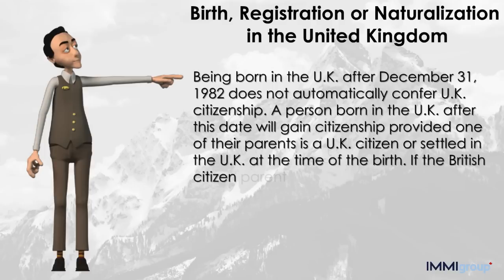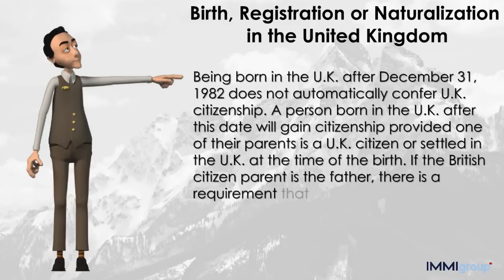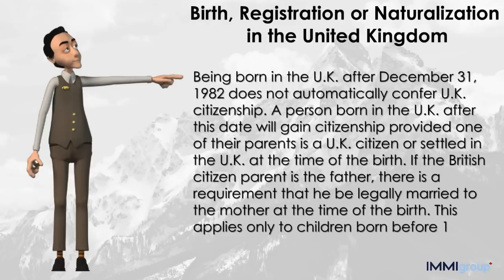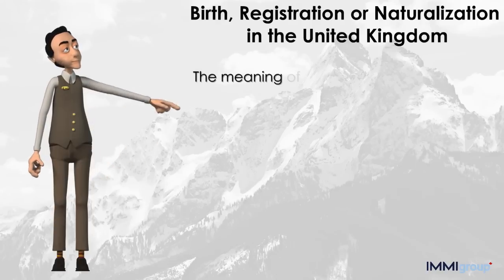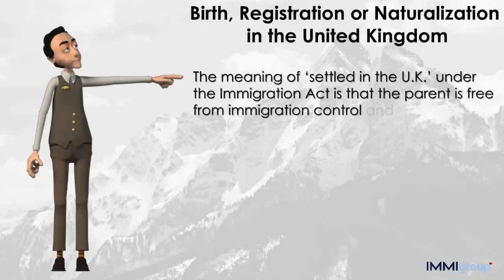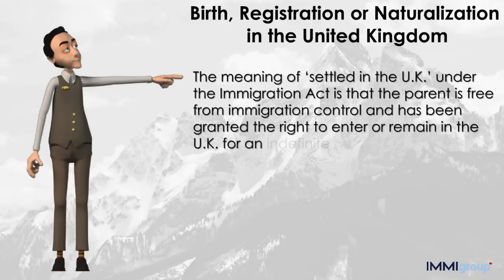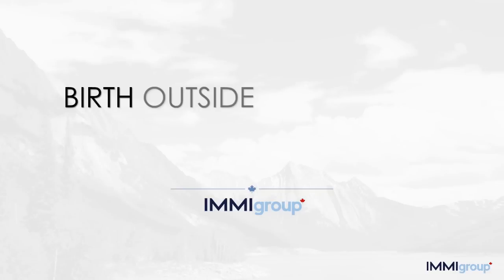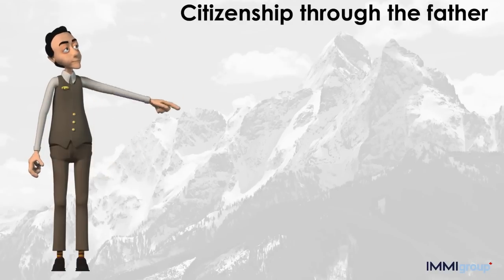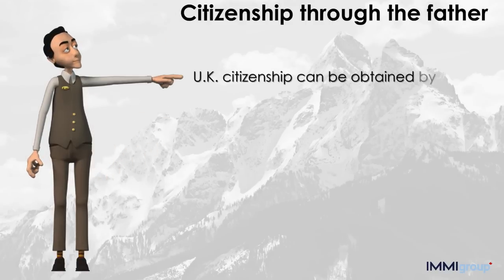A person born in the UK after this date will gain citizenship provided one of their parents is a UK citizen or settled in the UK at the time of birth. If the British citizen is the father, there is a requirement that he be legally married to the mother at the time of birth. This applies only to children born before July 1st, 2006. The meaning of 'settled in the UK' under the Immigration Act is that the parent is free from immigration control and has been granted the right to enter or remain in the UK indefinitely.